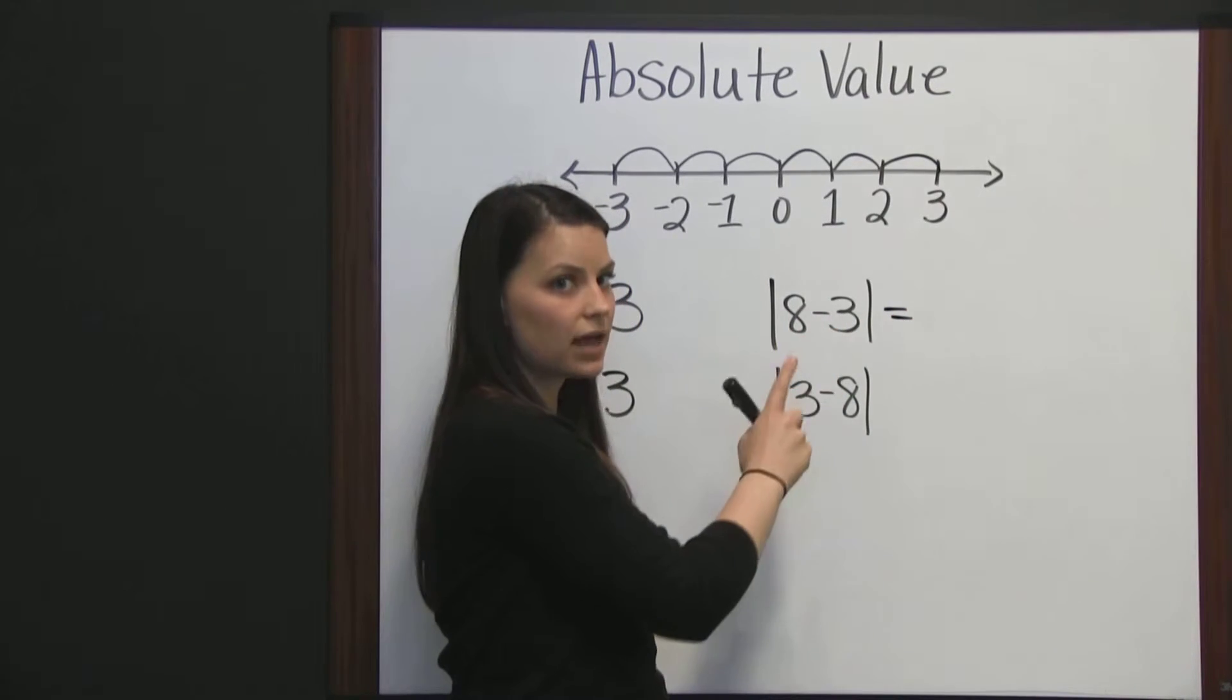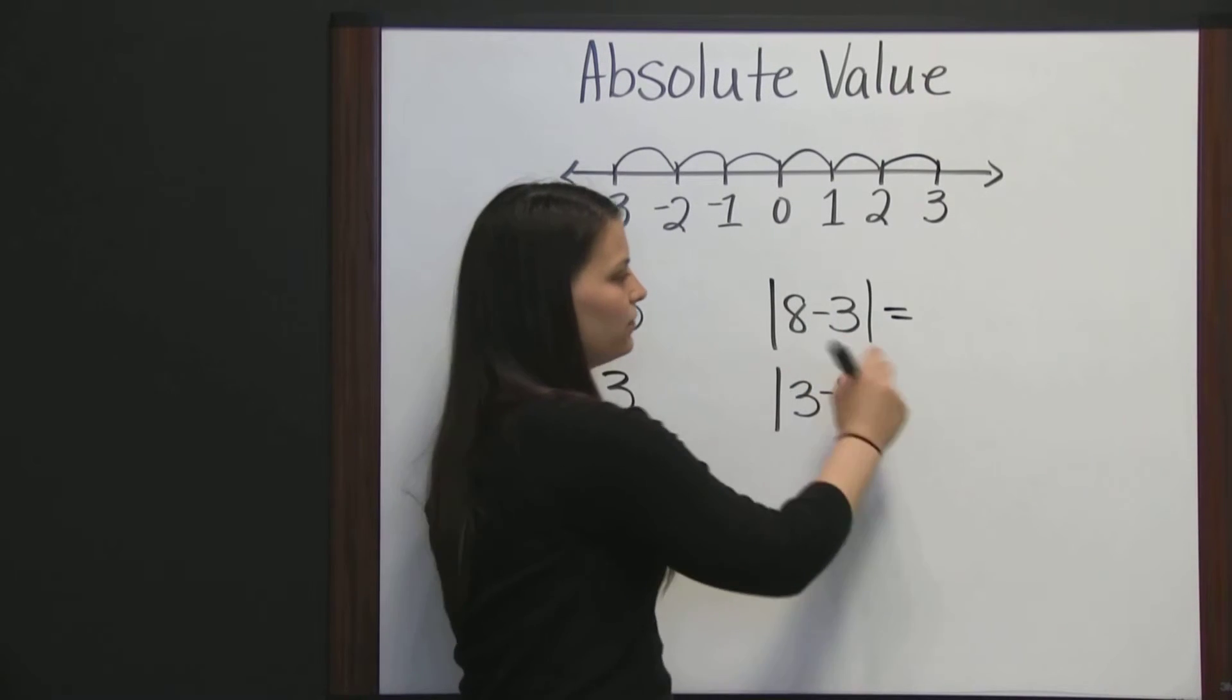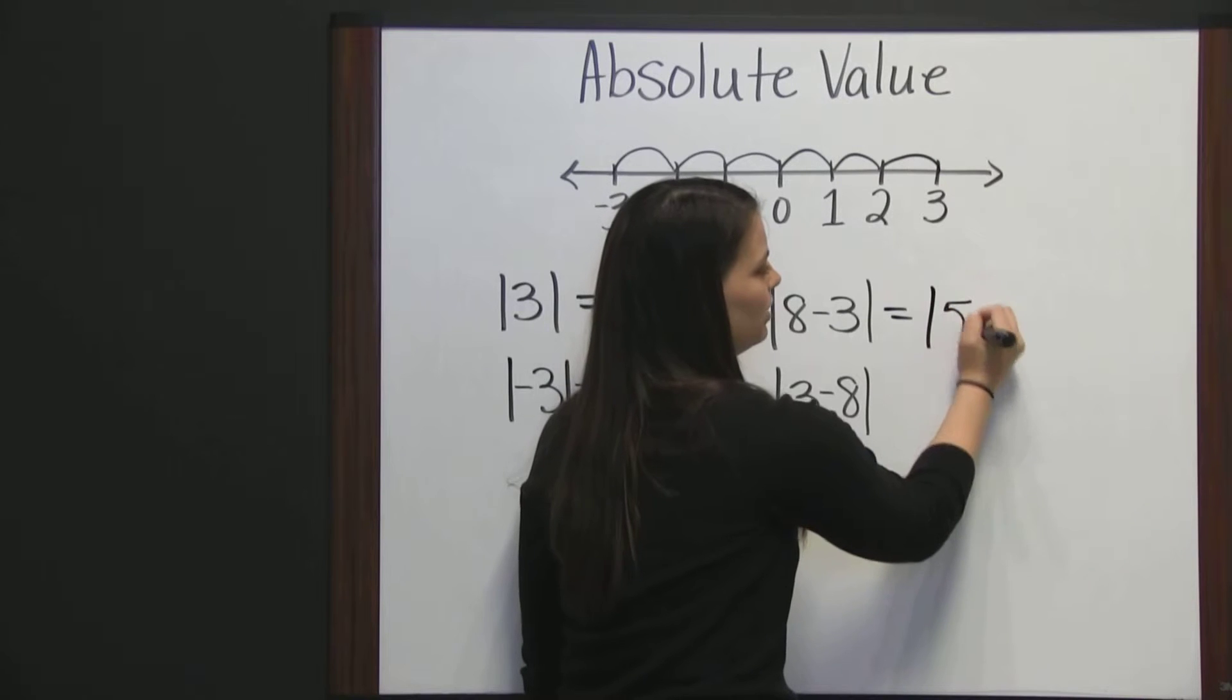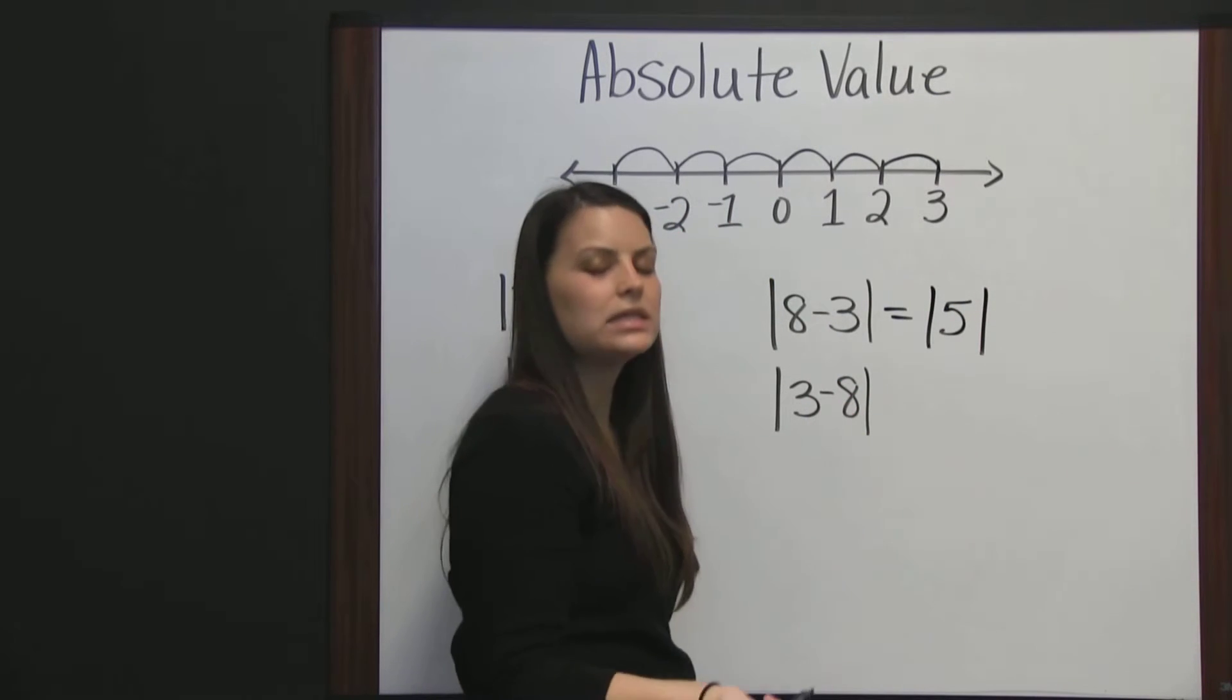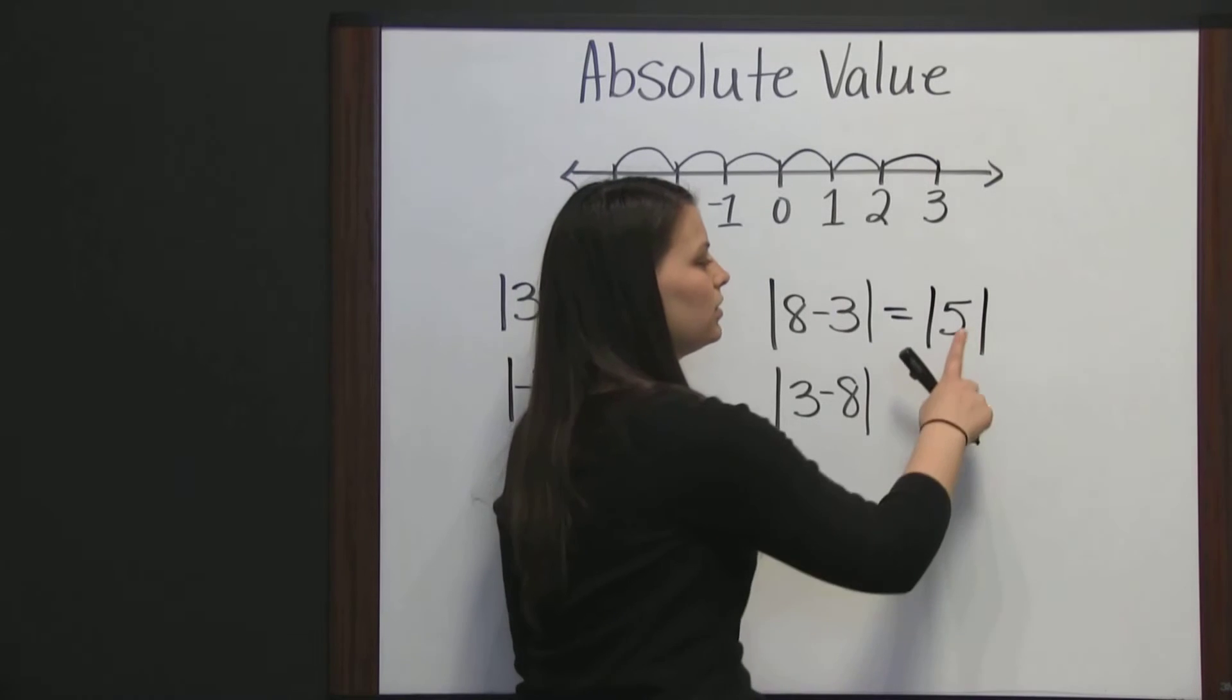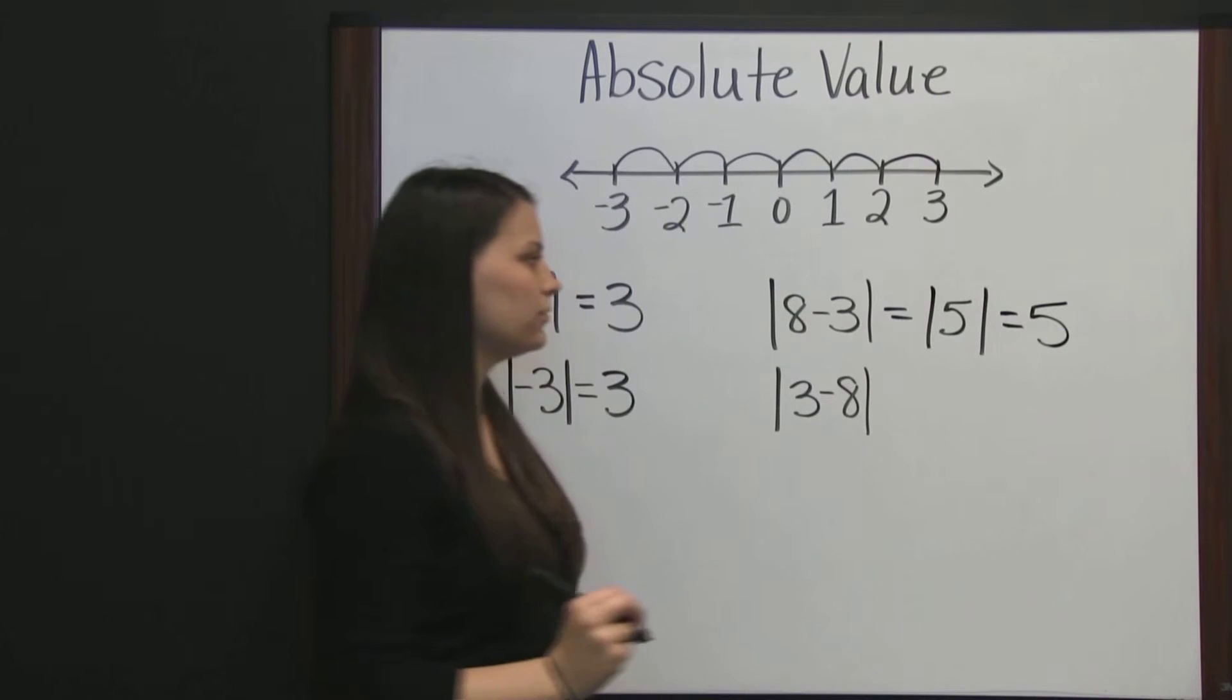Start on the inside finding your difference. Eight minus three is five. So, we have the absolute value of five, five, and again, absolute value is the distance from zero. Five is five places from zero.